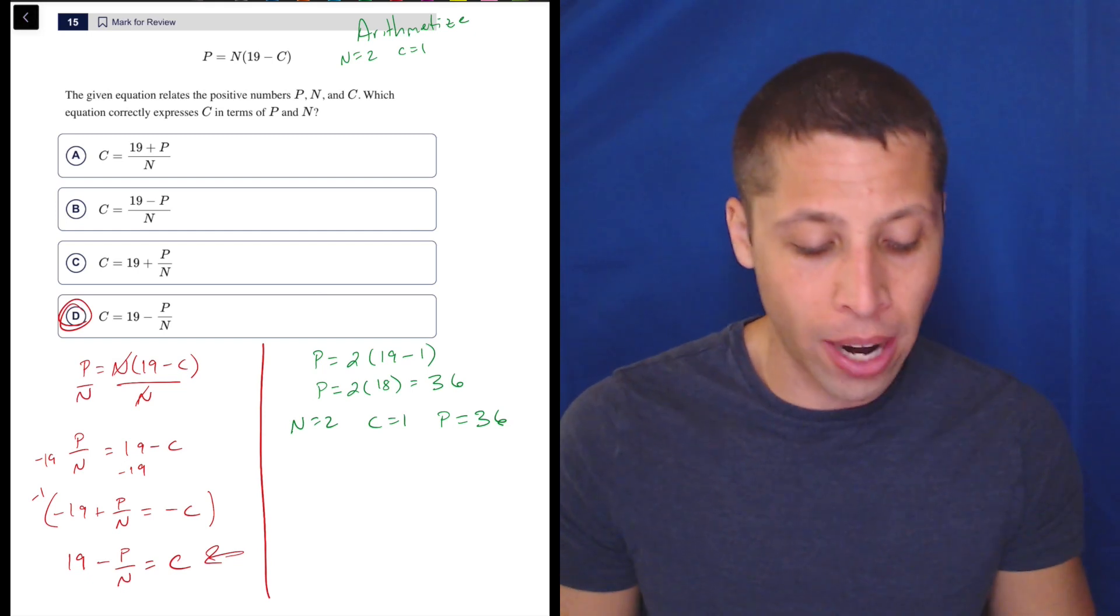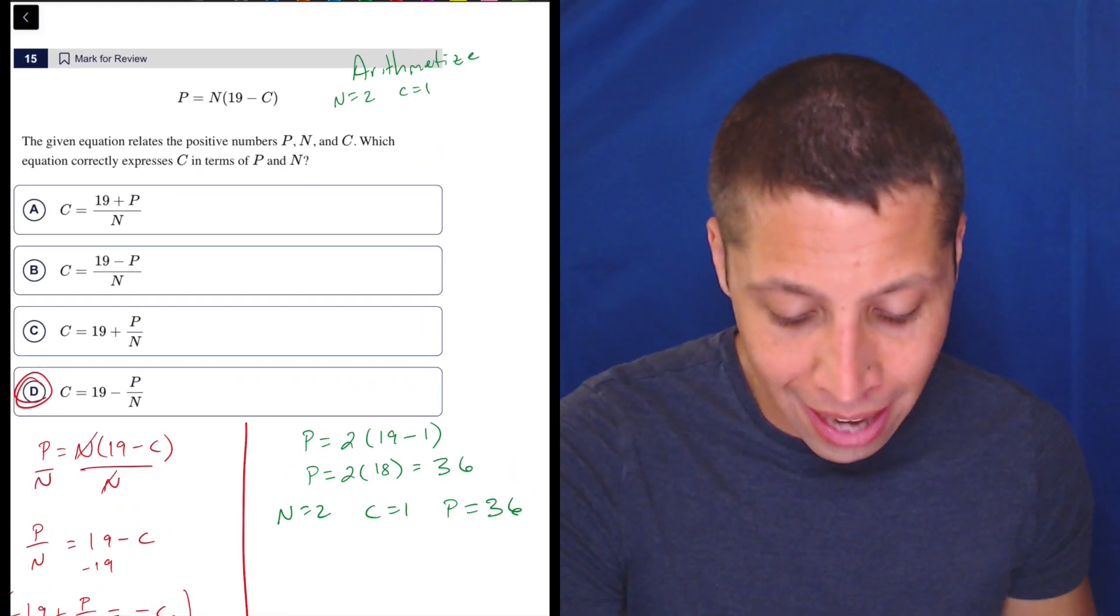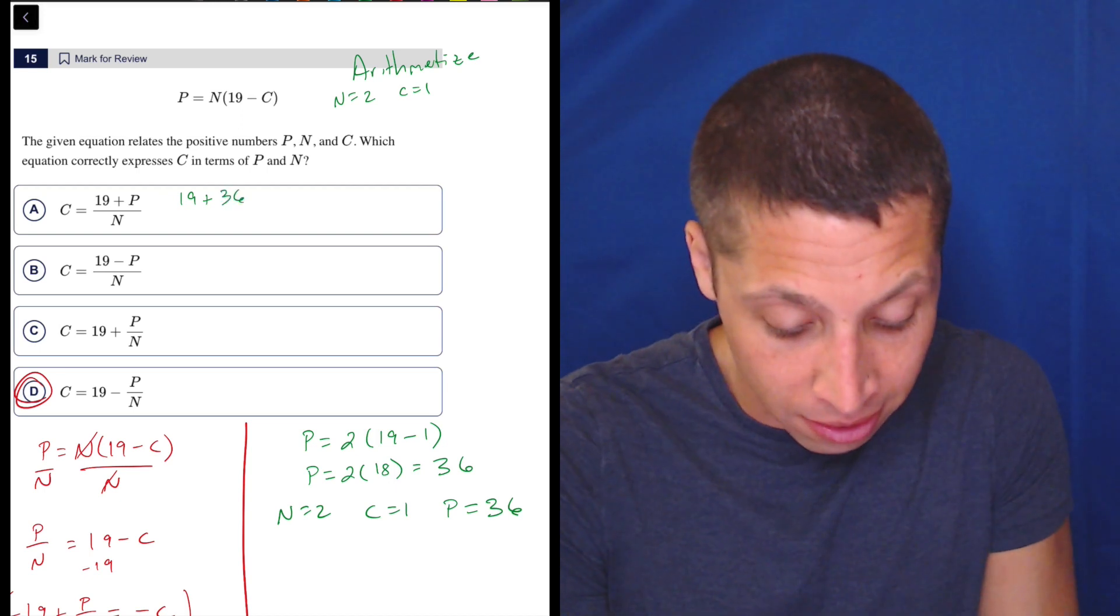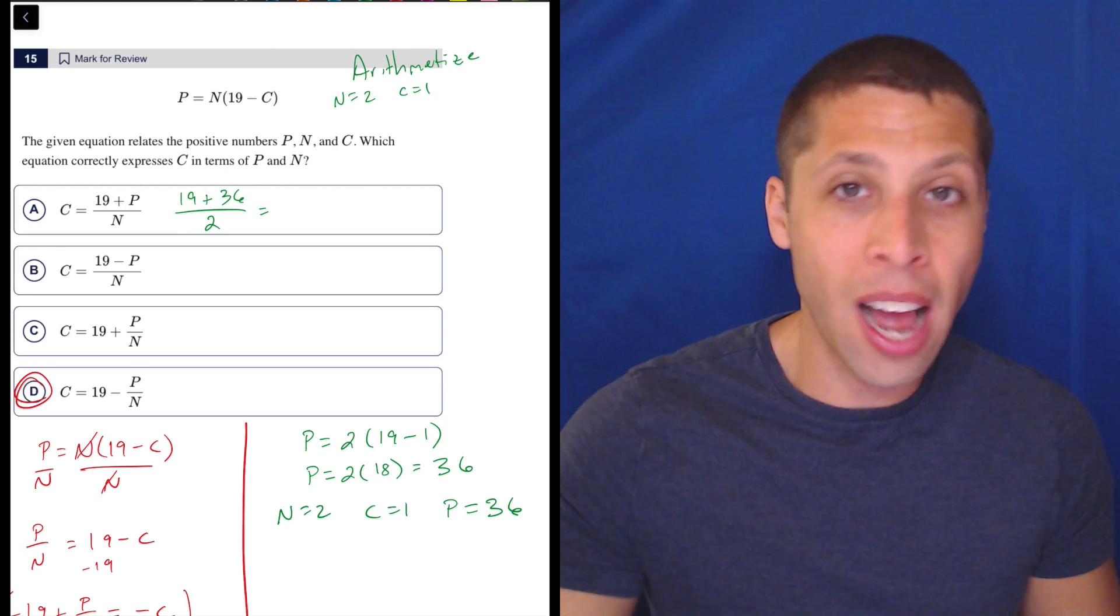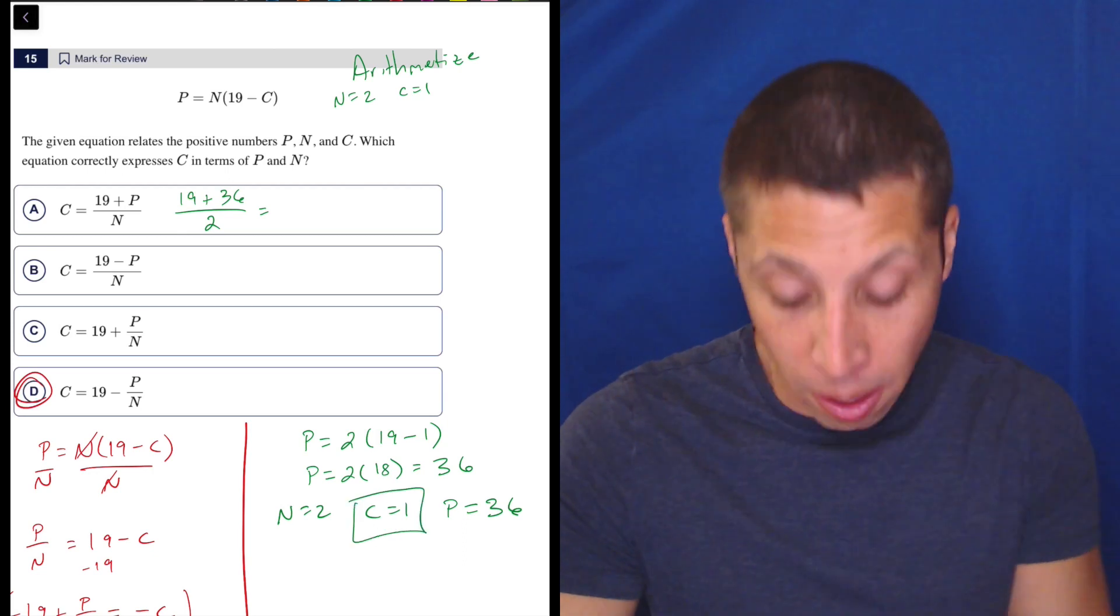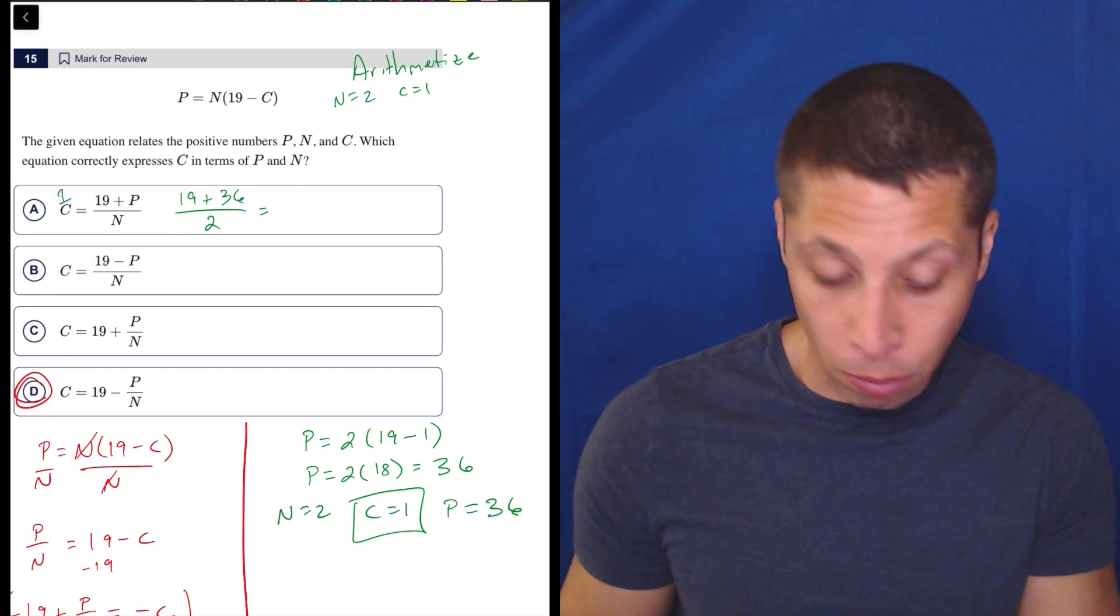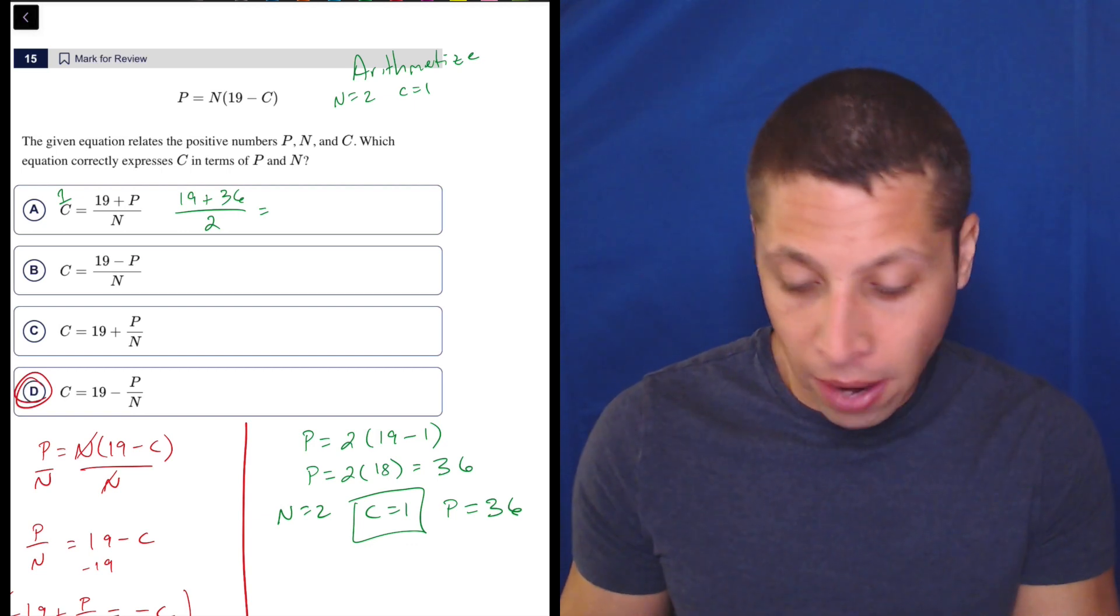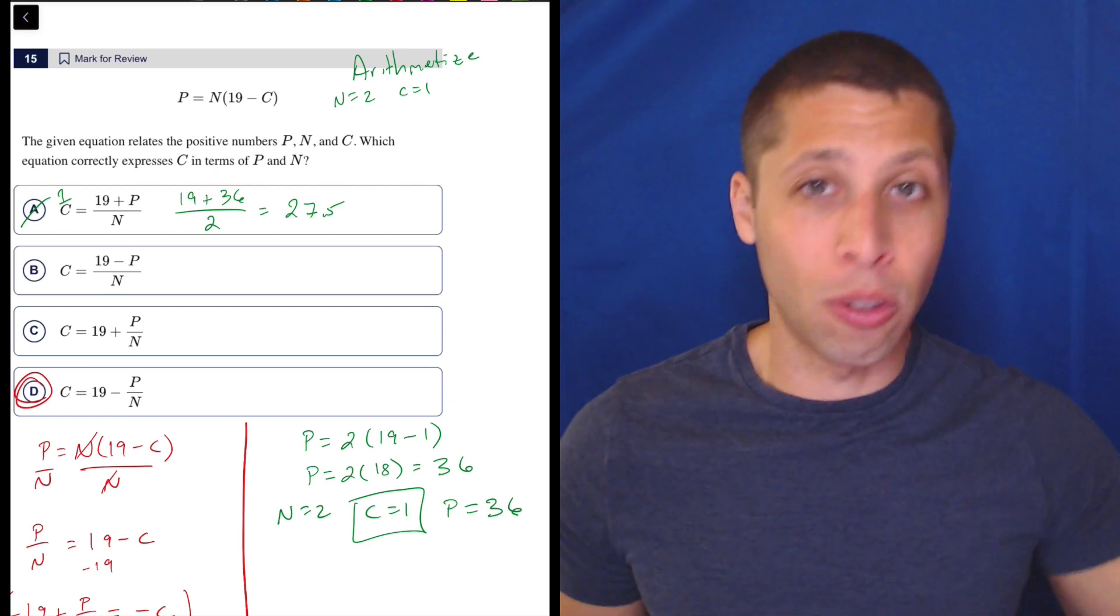And I'm going to use those values to see which of the answer choices is going to give me the same thing that I wanted. I'm just going to use the numbers that I have and try them in all these answers. If I go to choice A, I would have 19, P we said is 36, and N is two. So you might already know this is not going to get me one. Because that's what we want. We want to make these equations equal to one because that's what C is. I would get my calculator if I really wasn't sure. 19 plus 36 is 55 divided by two is 27.5.